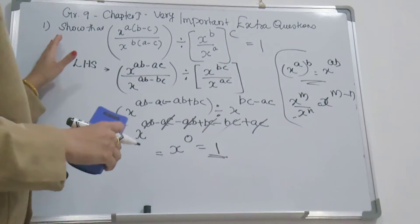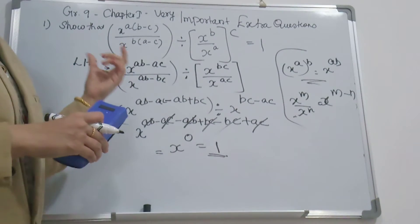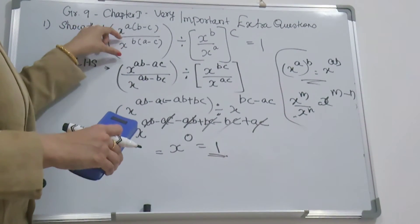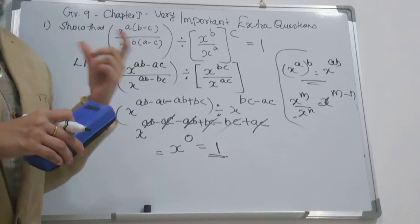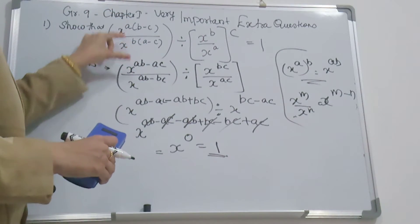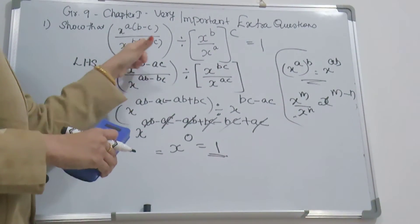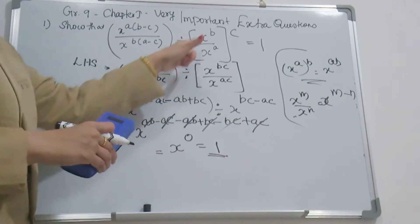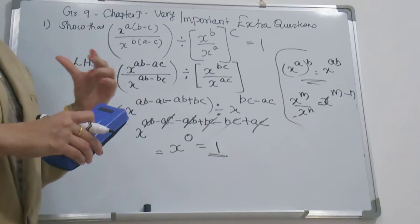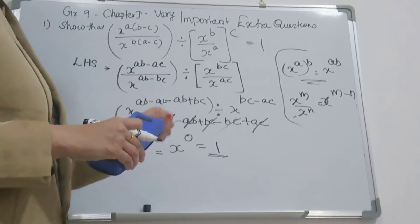I will explain this again. Now, you use x^a divided by x^b equals x^(a-b). That's why you use x^(ab-ac) divided by x^(ab-bc). Again, x^a whole power b equals x^(ab). That's why you use x^(bc) divided by x^(ac).